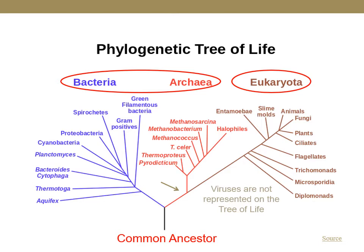Recall the phylogenetic tree of life. Prokaryotic cells are found in the bacteria and archaea domains, and organisms of the eukaryota or eukarya domain are, of course, made up of eukaryotic cells. In this representation of the phylogenetic tree of life, you can see how the common ancestor evolved into two separate branches of organisms. The archaea and eukaryote are along the same branch, which means they are more closely related to each other than they are to the organisms in the bacterial domain.